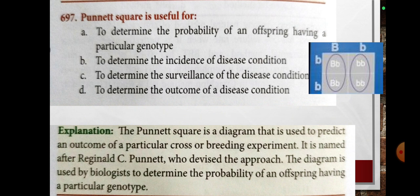The Punnett square is a diagram that is used to predict the outcome of a particular cross or breeding experiment. It is named after Reginald C. Punnett, who devised the approach. The diagram is used by biologists to determine the probability of an offspring having a particular genotype.